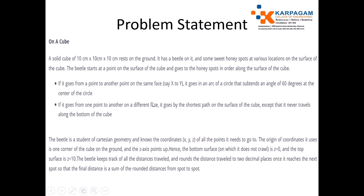Please understand the beetle travels along the surface of the cube. If it goes from a point to another on the same face, say X to Y, it goes in an arc of a circle that subtends an angle of 60 degrees at the center of the circle. If it goes from one point to another on a different face, it goes by the shortest path on the surface of the cube, except that it never travels along the bottom of the cube.